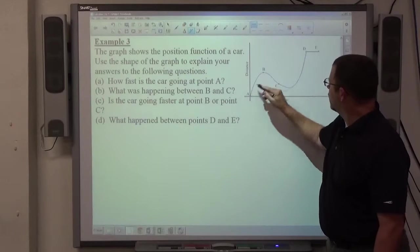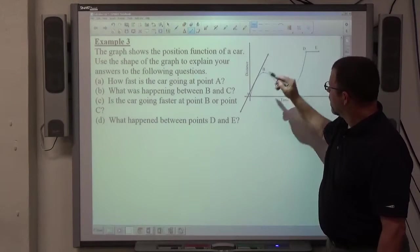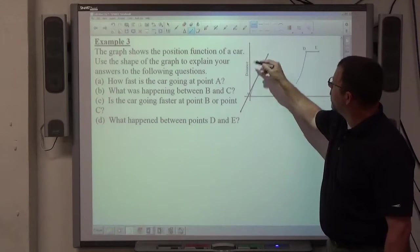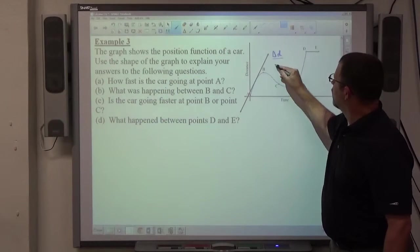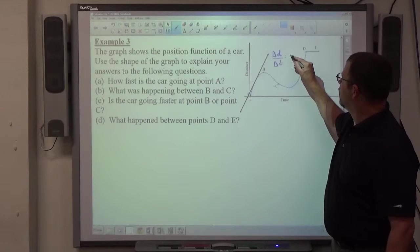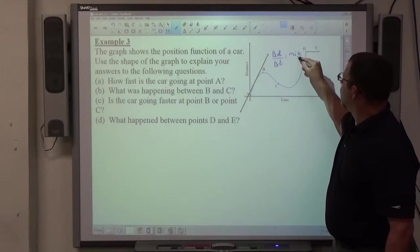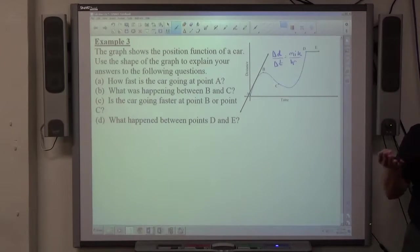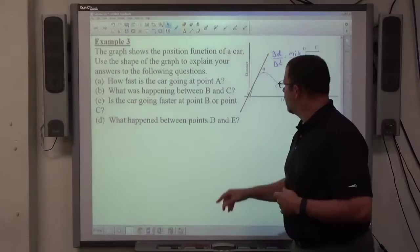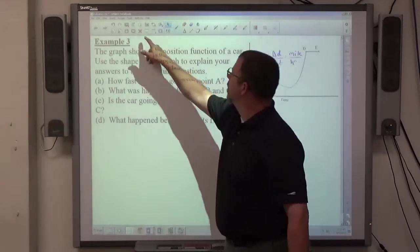So, here's a tangent line. The slope of that tangent line is going to be change in distance over change in time. If distance is in miles and time is in hours, you're getting miles per hour as a unit, meters per second is another possibility for this.